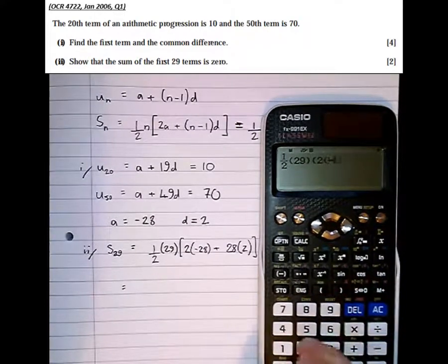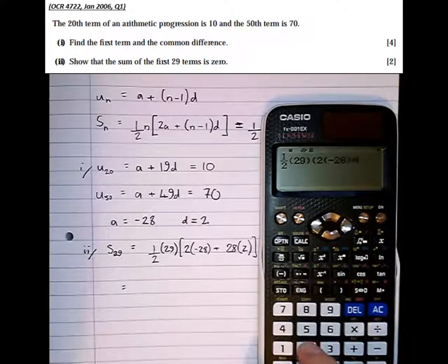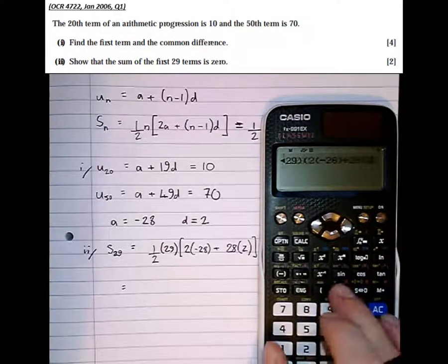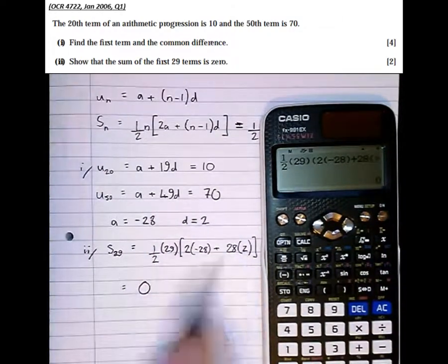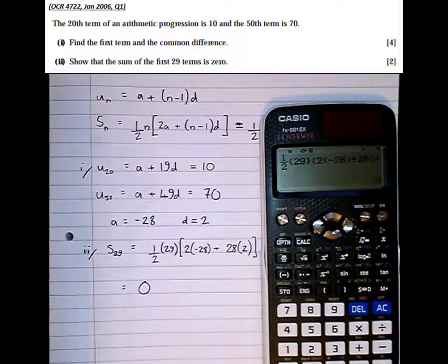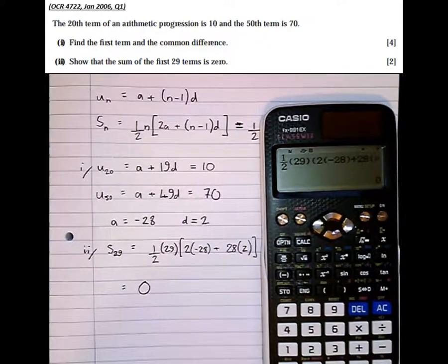2 lots of minus 28, plus 28 lots of 2, which is equal to 0. So, and this working here is enough to explore full marks. So, let's do it, let's continue to see. Thank you.